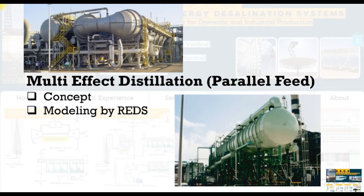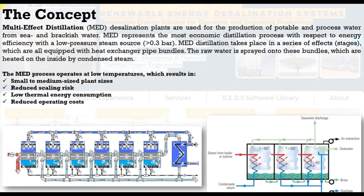What is the concept of Parallel Feed Configuration and how we can run our model and simply extract our data. Multi-Effect Distillation plants are widely used for the production of potable and processed water from sea and brackish water, which represents the most economical distillation thermally with respect to energy efficiency and specific power consumption, because it uses relatively low pressure steam source around 0.3 to 0.5 bar. We are talking about 60 to 70 degrees Celsius, allowing some kind of processed heat with MED.